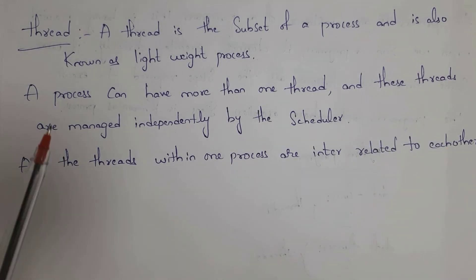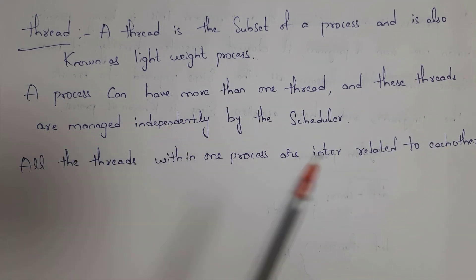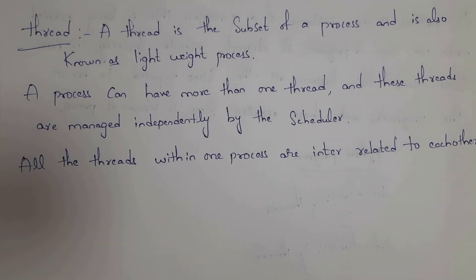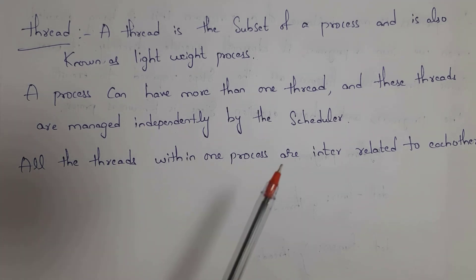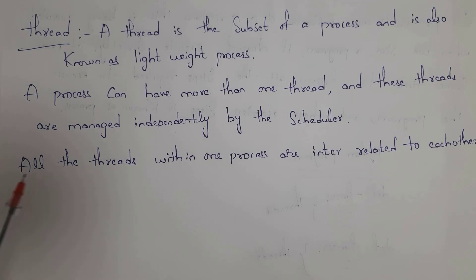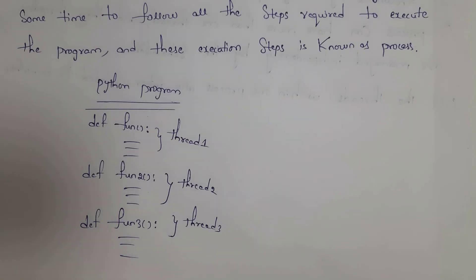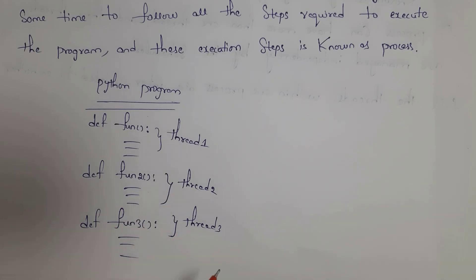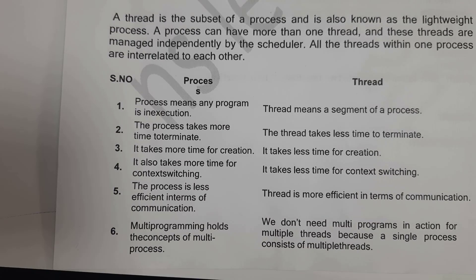These threads are managed independently by the scheduler — our CPU will manage these threads. All the threads within one process are interrelated to each other. These three threads in a single process are interrelated to each other.